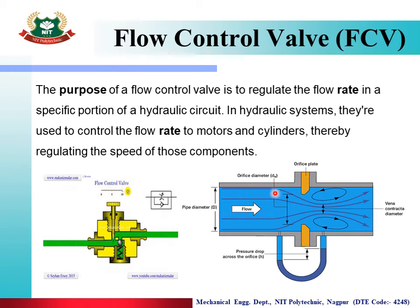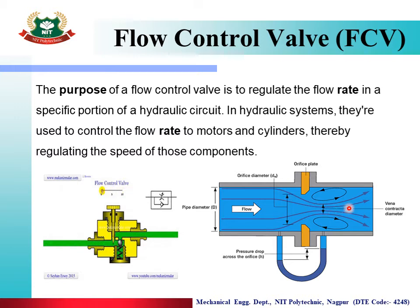When the orifice plate area is adjusted, the flow is throttled and the flow passage becomes smaller. As a result, the flow rate drops and the pressure drops. The flow passage becomes less, so the flow distributed is reduced. This is the function of a flow control valve.